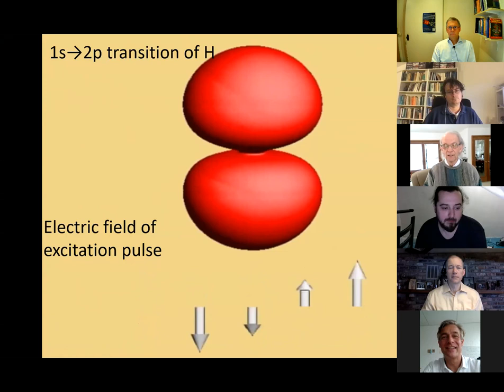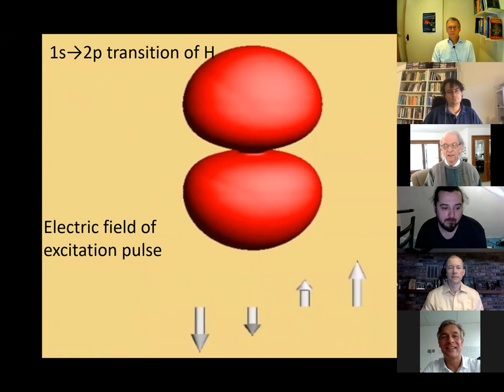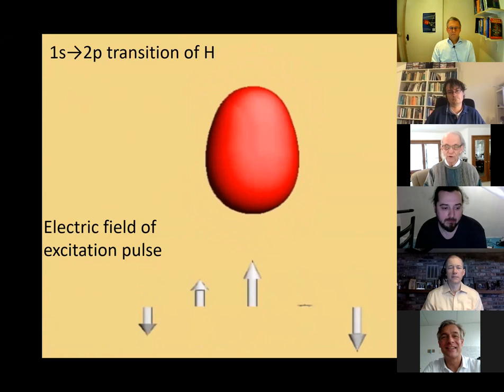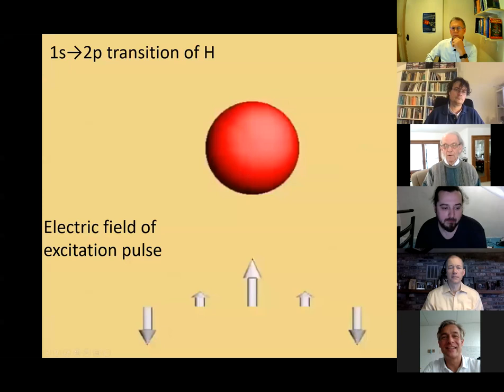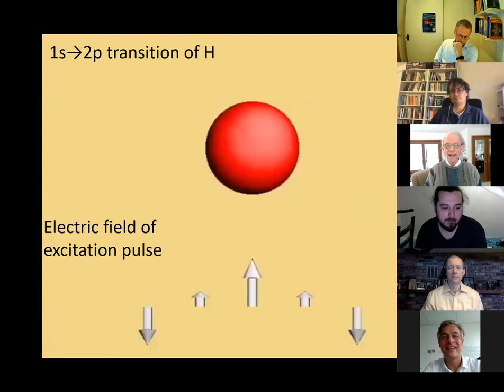We do experiments where we have multiple pulses coming in, so we can create additional states. This is a two-state system, but we can also bring in additional lasers to create additional states and add them to our Schrödinger cat state. Rather than having this very simple oscillation, we can have much more complex oscillations at all of the frequency combinations of the states that make up the Schrödinger cat state.